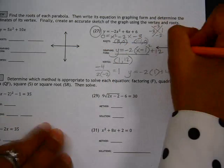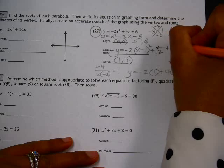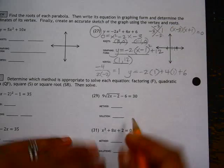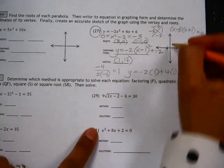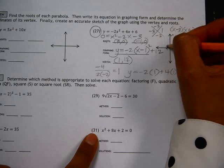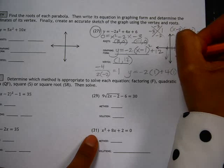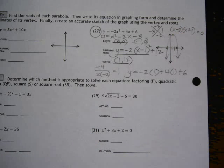So that's enough to graph it. We have a root at negative 1, a root at positive 3. This graph opens down with a vertex at 1, 12. So a quick sketch would look something like this. Thank you.